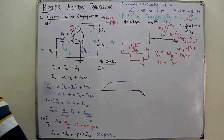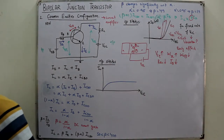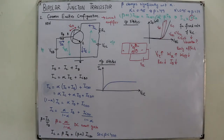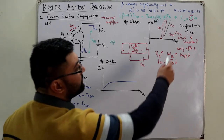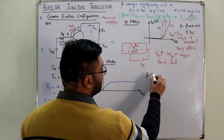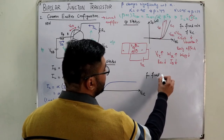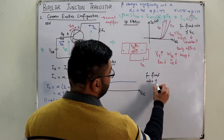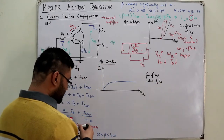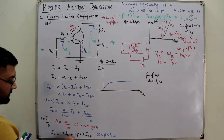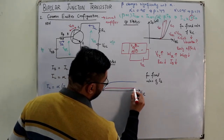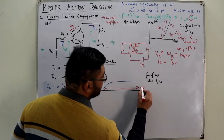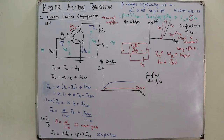IC depends on IB: as IB increases, IC increases. The output characteristics are plotted for different fixed values of IB. When IB = 0, IC = (β+1)·ICBO. As IB increases, IC increases proportionally. These are the family of output characteristic curves for different values of IB.